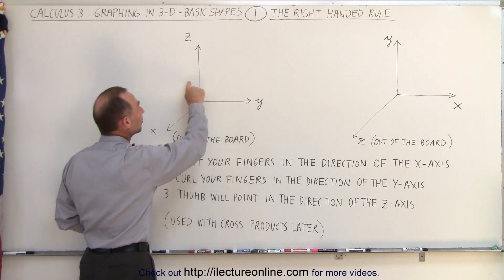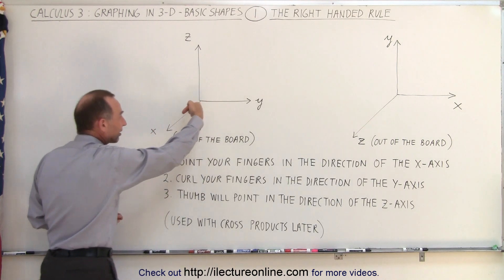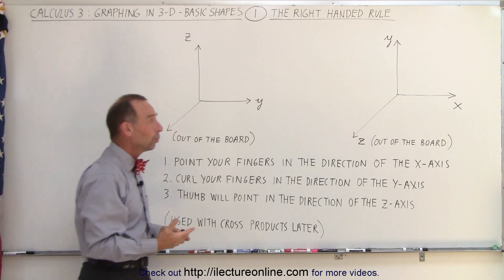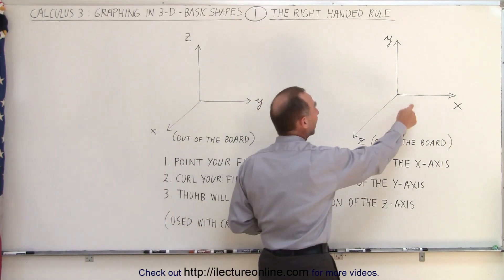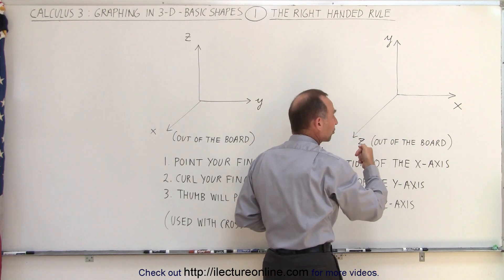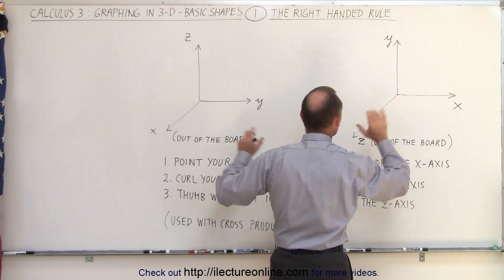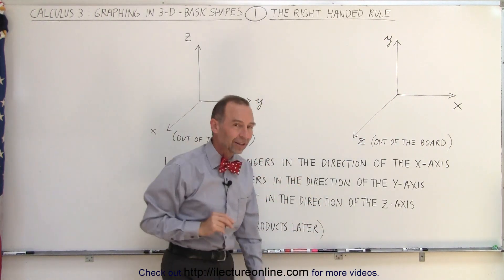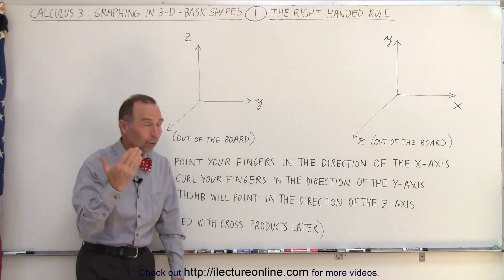We have y and z in the plane of the board, and the x-axis coming out of the board. Sometimes we'll see the x and y-plane in the plane of the board, and the z-axis coming straight out. Now you're wondering, are those the same? And indeed, they are exactly the same, and we can check that using the right-hand rule.